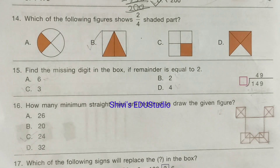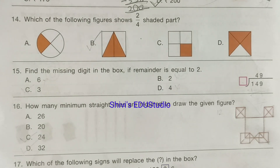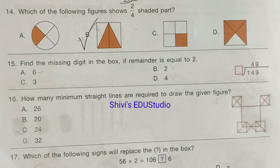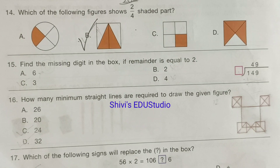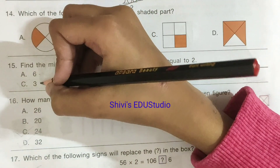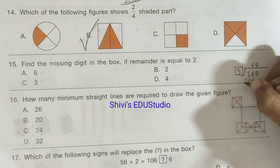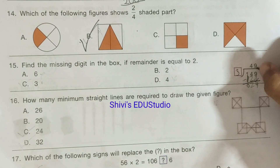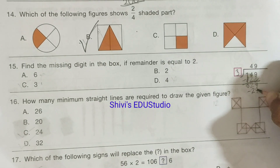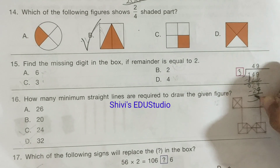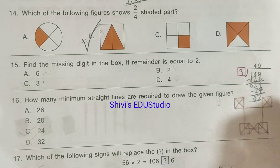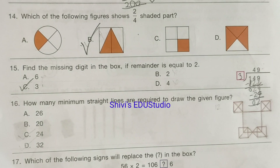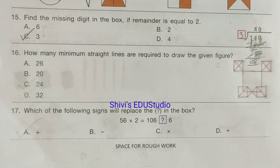Question number 14: Which of the following figures shows two-fourths shaded part? Option B is the correct answer — it is made of four parts with two shaded. Question number 15: Find the missing digit in the box if the remainder is equal to 2. Option C, 3, is the correct answer.